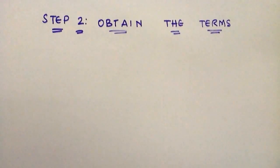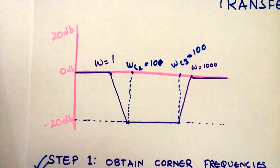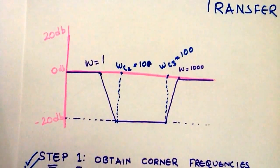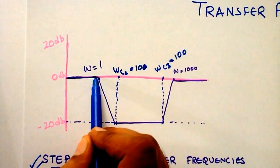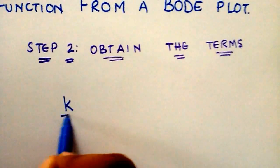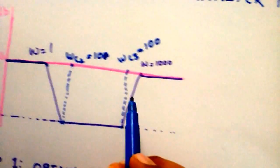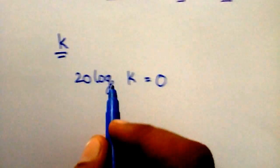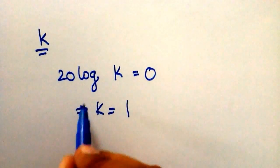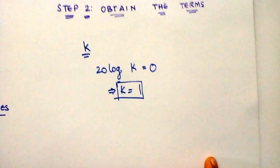Step 2 is to obtain the terms in the transfer function in both the numerator and denominator. Now, even though we have four corner frequencies giving us four terms, you might also have a constant term. To find this constant term k, we say 20 log k equals 0, since the initial magnitude is zero decibels, which means k is equal to 1. So the constant term t1 is equal to 1.